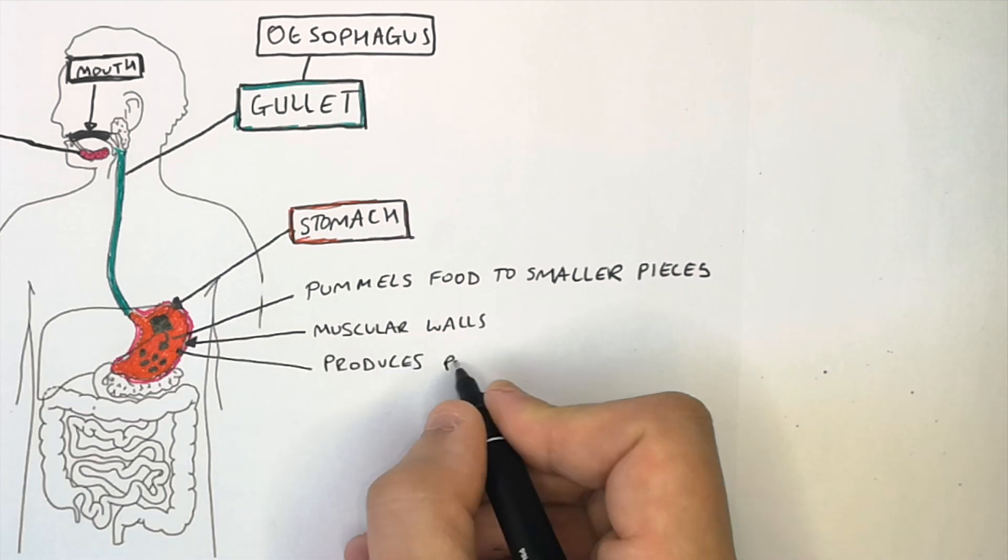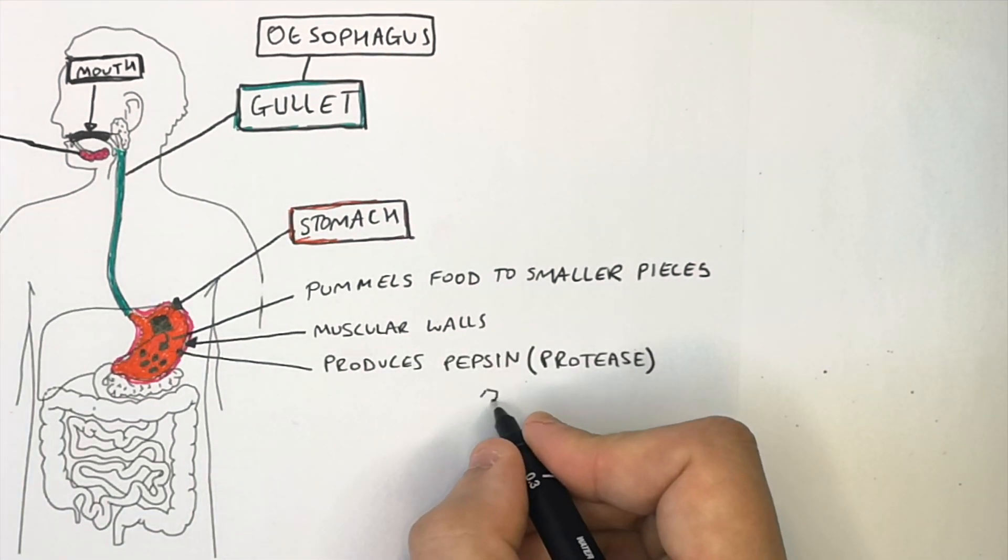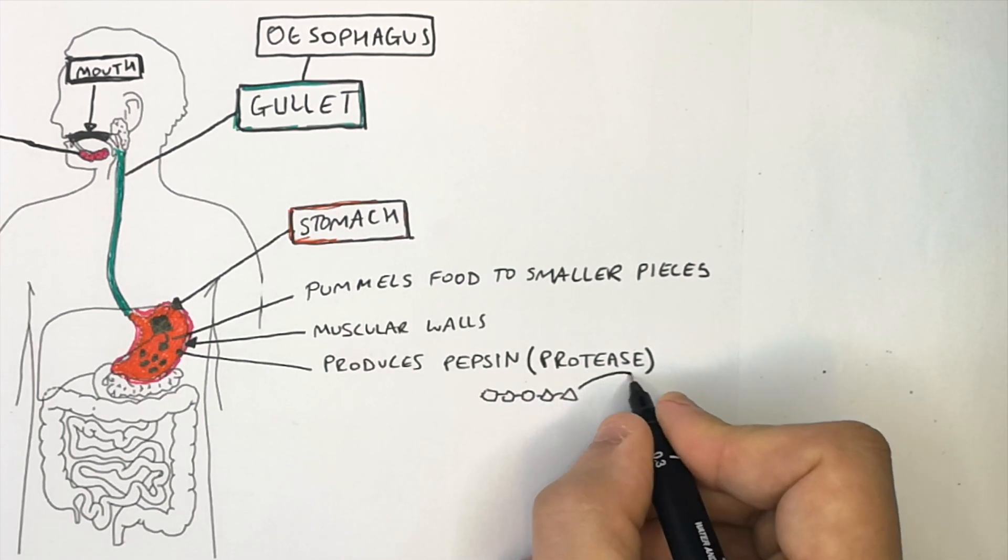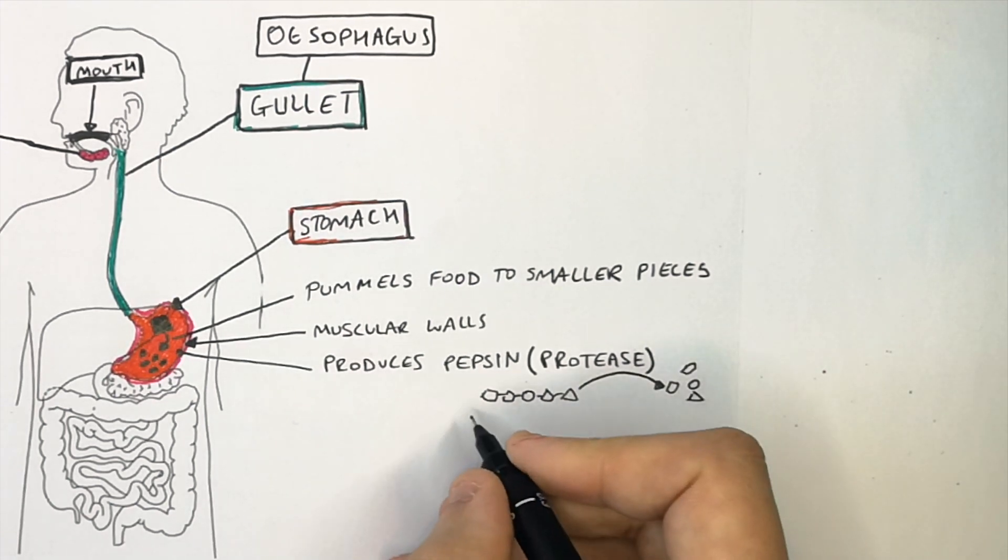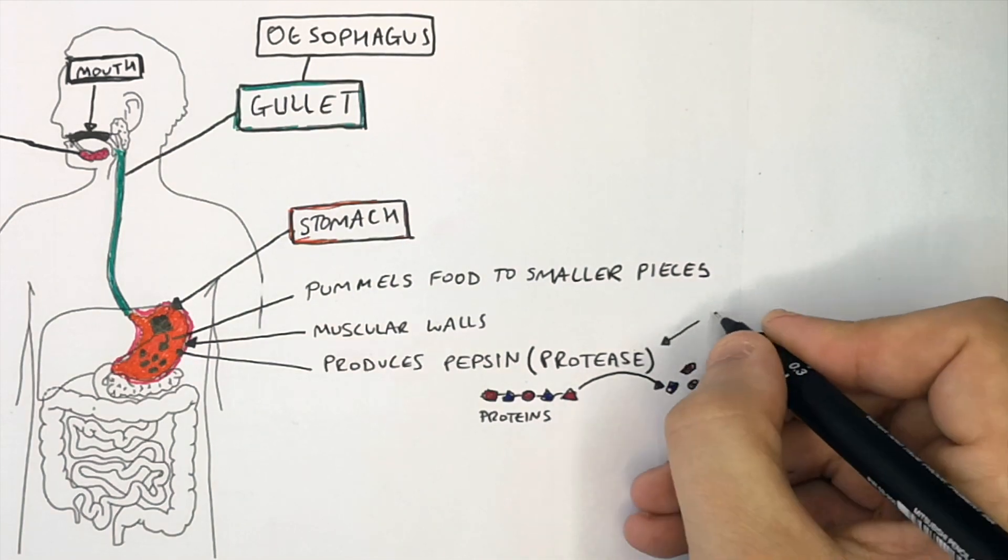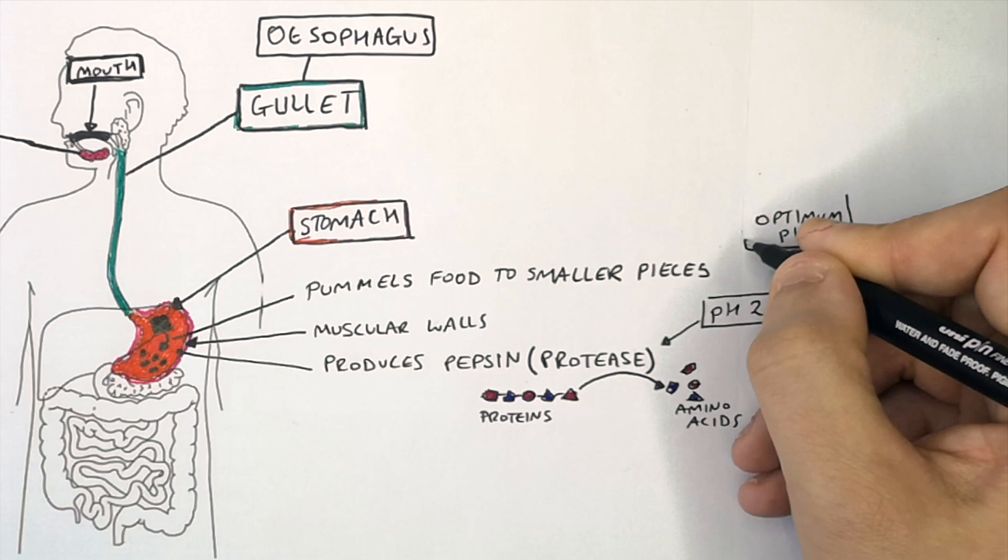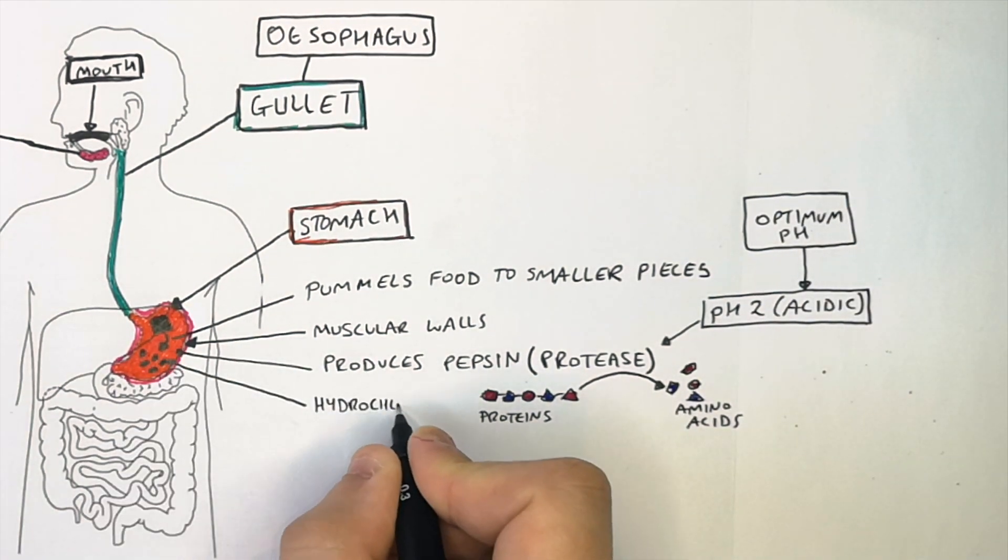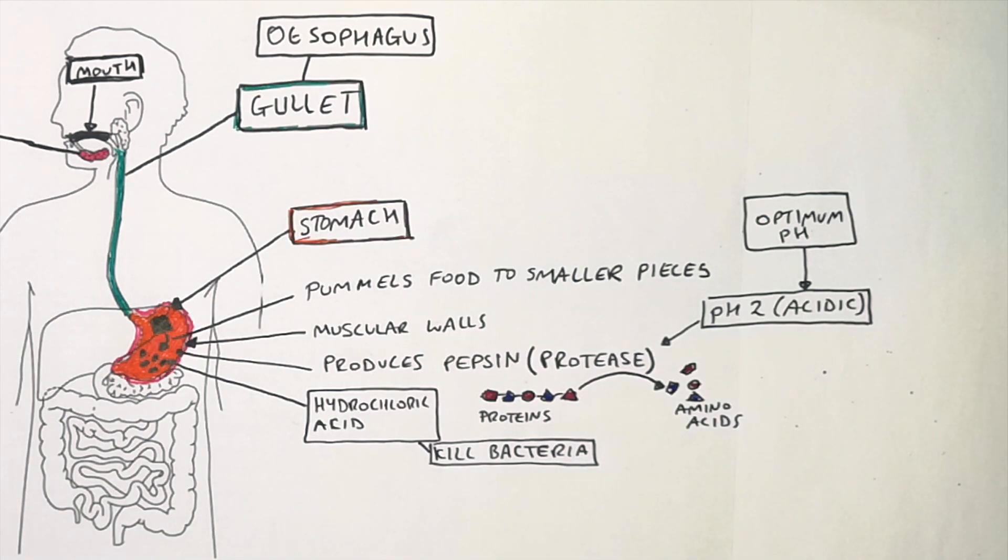The stomach produces an enzyme called pepsin, which is a protease. Pepsin breaks down proteins into amino acids in the stomach. The stomach has a pH of 2, which is acidic because of hydrochloric acid. The hydrochloric acid kills bacteria.